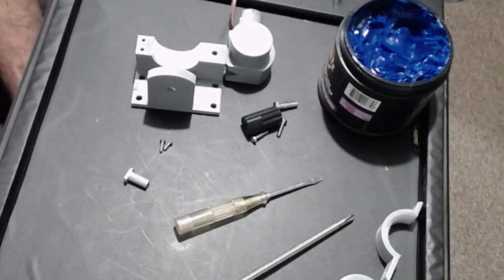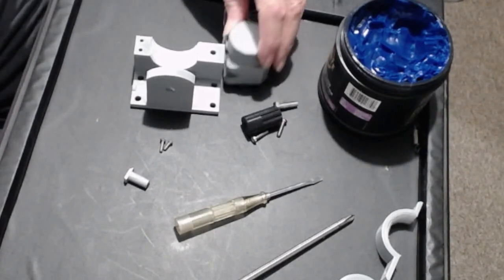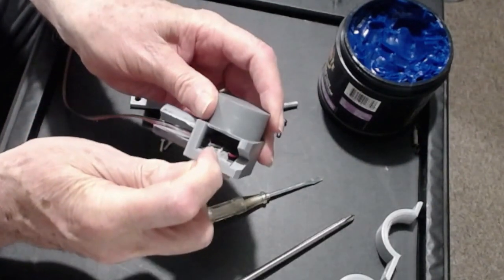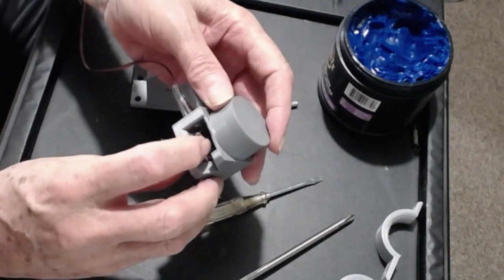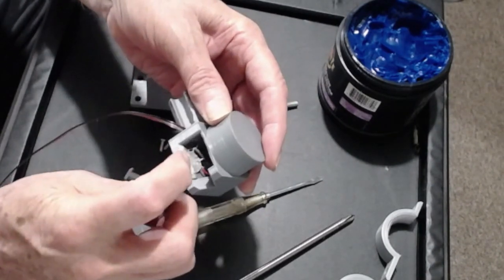The next step is to do a bit more assembly. You'll notice I put some hot glue in here just to those pins. I separated them first, then I put a bit of hot glue in there.